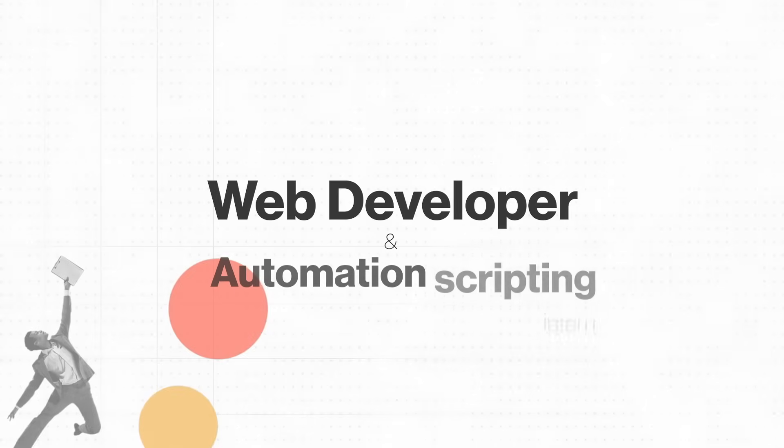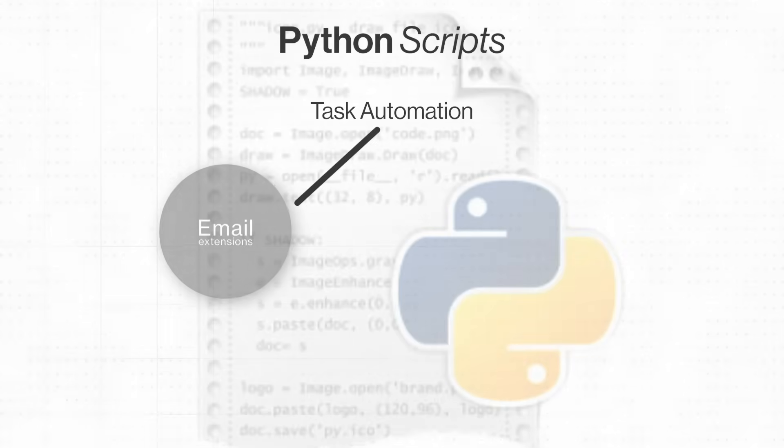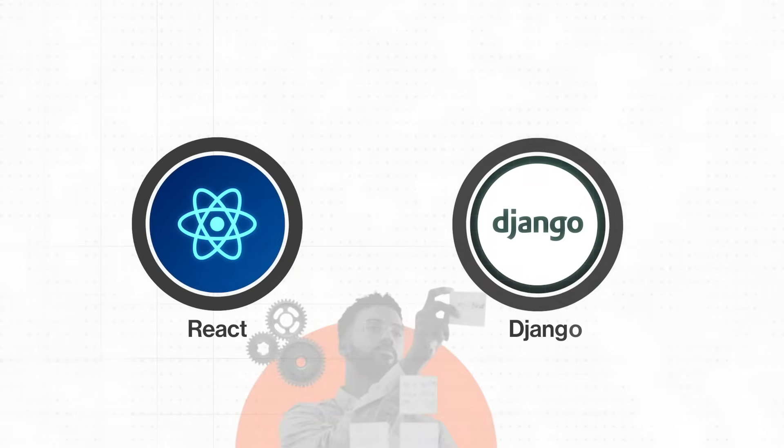Ayush, you mentioned that you had prior internship experience. Can you describe that? I got my internship by reaching out to people through LinkedIn, because in 2024 there were not many on-campus opportunities. I got an internship at Century Flyboards India Limited as a web developer and automation scripting intern. I worked on Python scripts for task automation like email automation, and I also learned React and Django there.